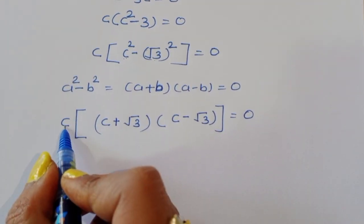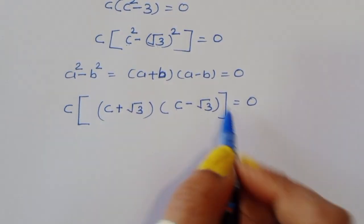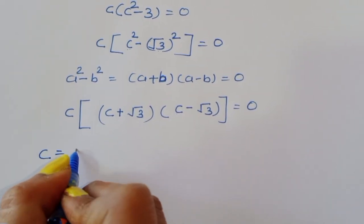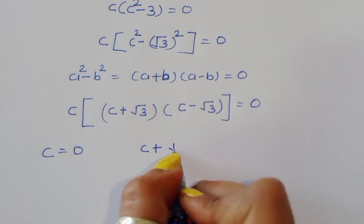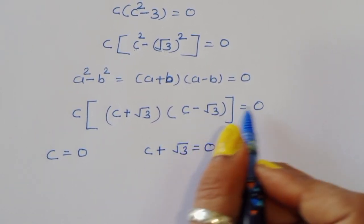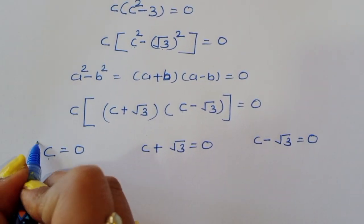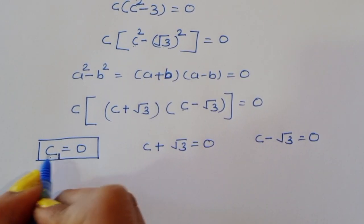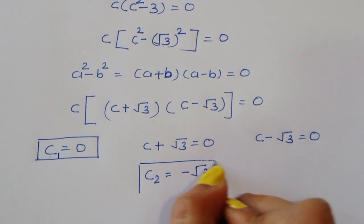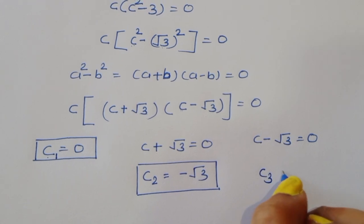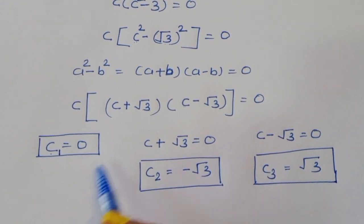We have three terms: the first is c, the second is c plus square root of 3, and the third is c minus square root of 3, all equal to 0. So we get three equations: c₁ equals 0, c₂ equals minus square root of 3, and c₃ equals square root of 3.